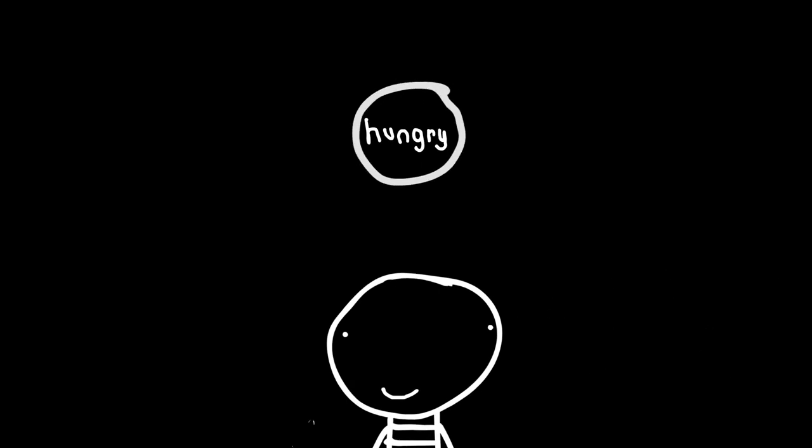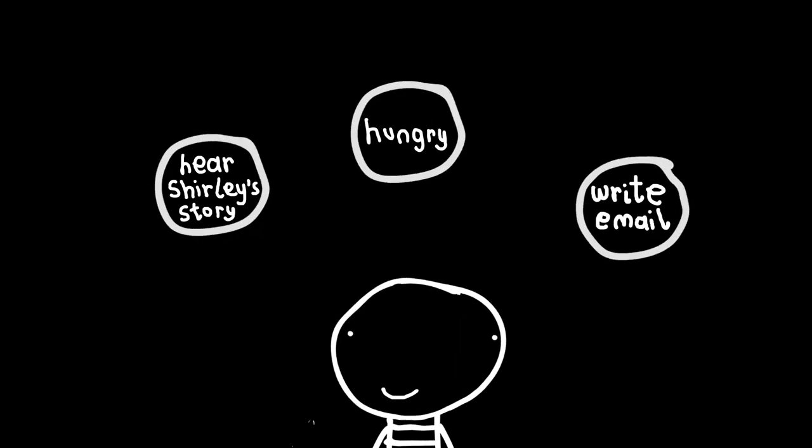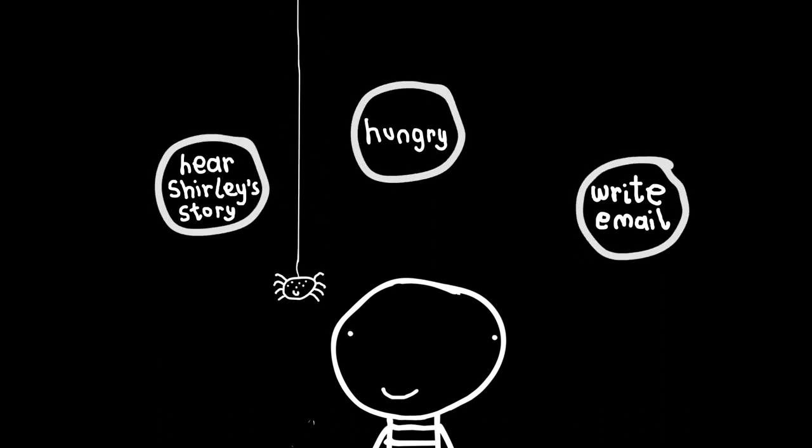But of course, we have many needs happening at the same time. For example, although Bruce is hungry, he also wants to hear the end of Shirley's story. Not only that, he's got an email he really needs to be responding to. And sometimes one cycle can interrupt another.